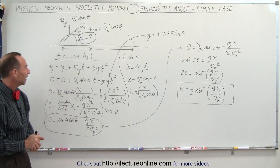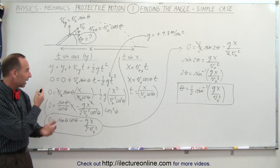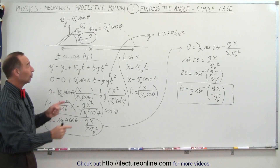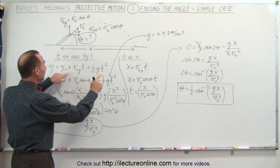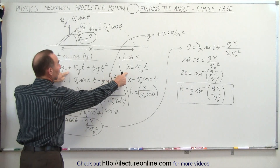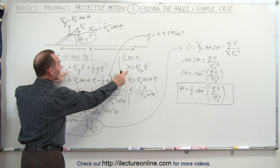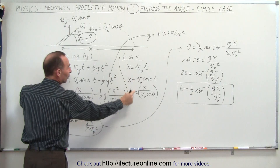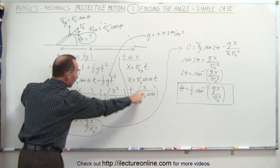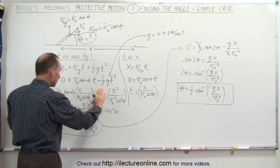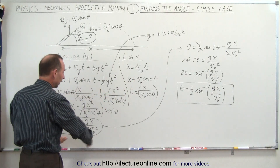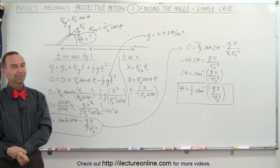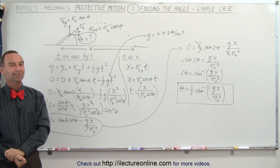To recap: solve for the time in the air in both the x and y directions, then solve the x equation for time, plug that into the y equation to eliminate time, and through a series of algebraic and trigonometric steps you find the angle. That's how it's done.